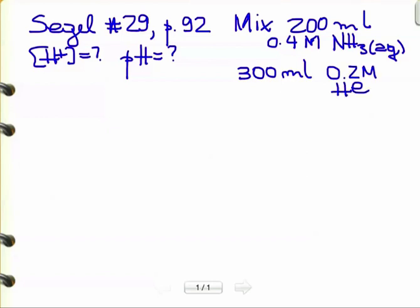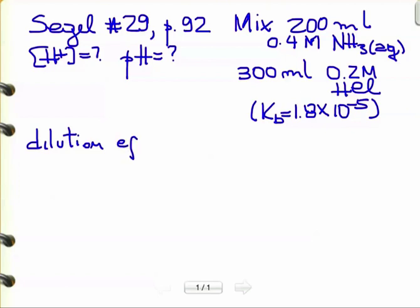The Kb is given as 1.8 times 10 to the power of minus 5 for ammonium. So let's look at the dilution first and see what we get. The Kb is 1.8 times 10 to the power of negative 5. We approach this problem by seeing who is in excess and what's going to happen from there.